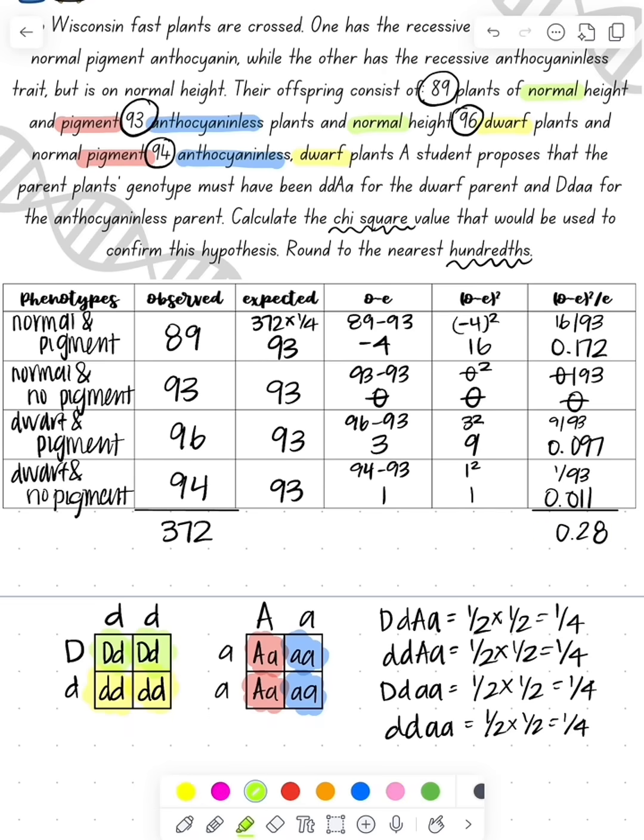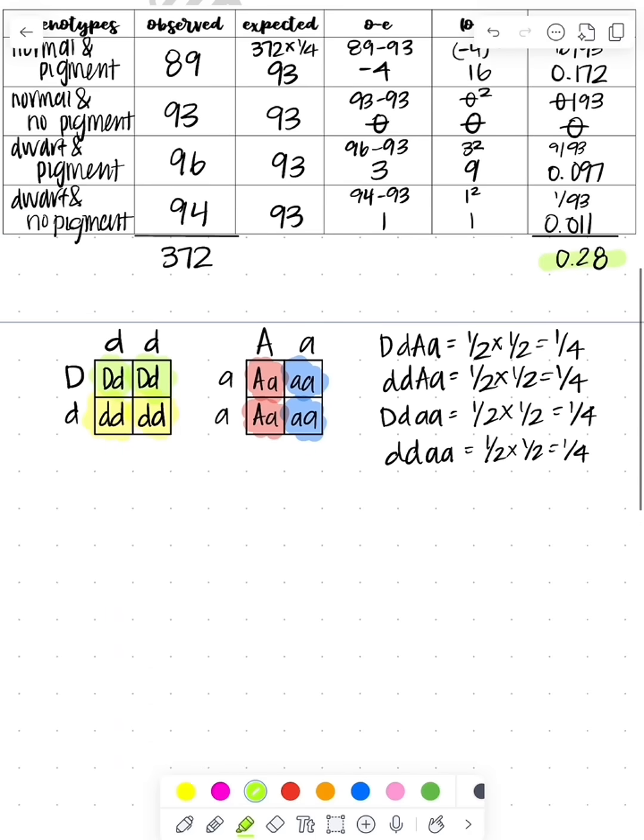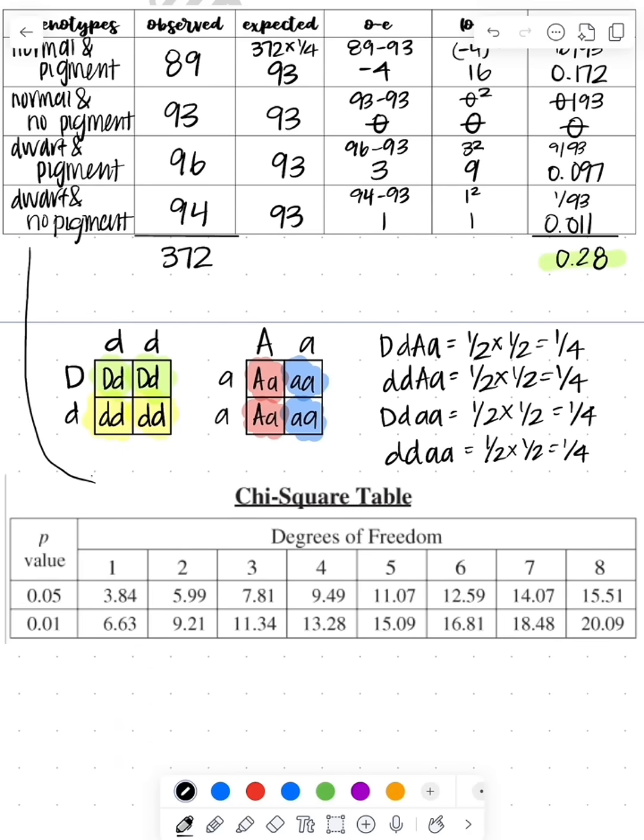So we're going to compare this to the table value. Our table value, we find our degrees of freedom to be three because we have four different phenotypes minus one gives us three. And then we're going to do a p-value of 0.05. So our critical value or our table value is 7.81.